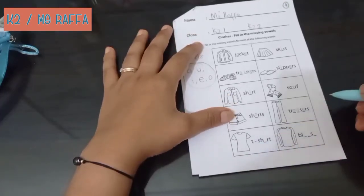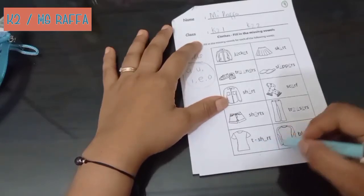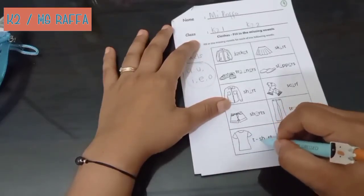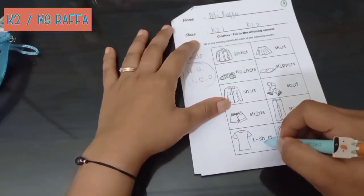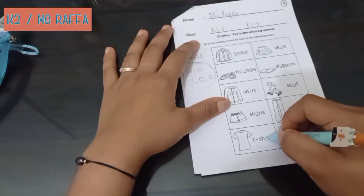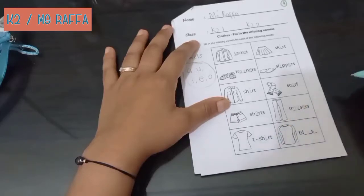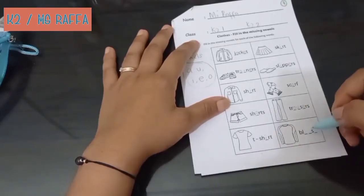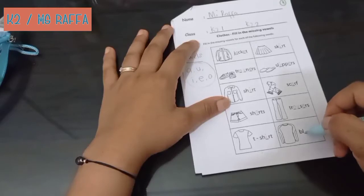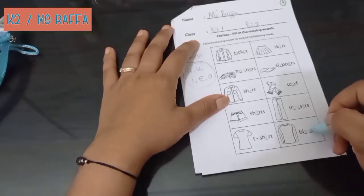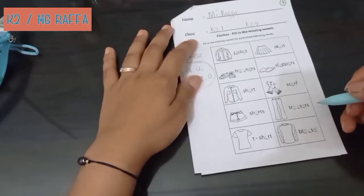T-shirt, kaos. T-shirt. T-S-H-I-R-T. T-shirt. Blouse, baju blouse. Blouse. B-L-O-U-S-E. Blouse.